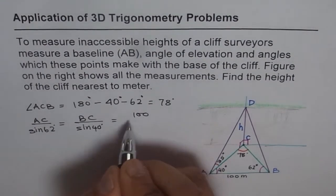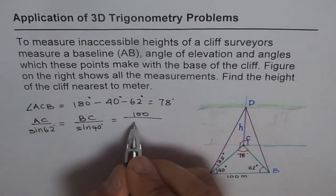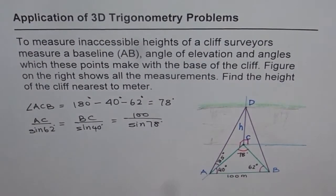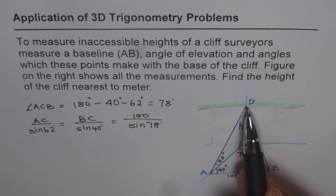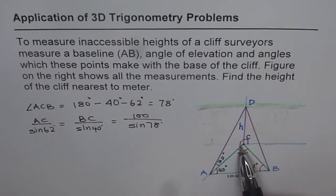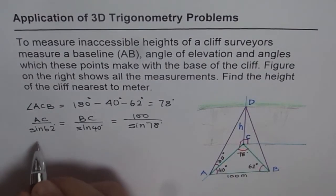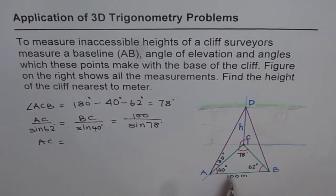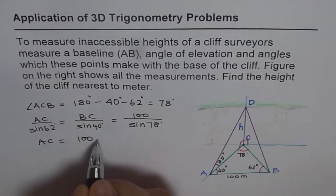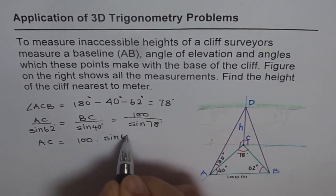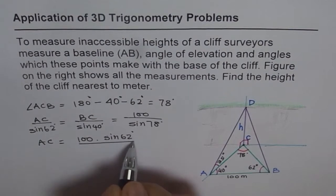So sine of 62 is equal to BC over sine of 40 degrees should be equal to AB, which is 100 over sine of 78 degrees. From here, we can find both AC and CB. In this case, since we know the angle of elevation 35 degrees in the triangle ADC, AC is a must to find. So let's find AC first. Well, the only thing which we need to find to solve this particular problem.